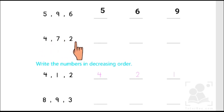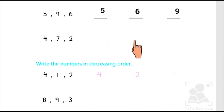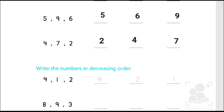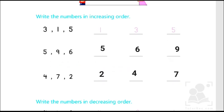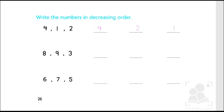Now let's move on to the next one: 4, 7, 2. Amongst these three numbers, the smallest one is 2, then comes 4, and then comes 7. So we are going to write the increasing order as 2, 4, 7. We are all done with the increasing order of numbers — the smallest is 2, then 4, and the greatest is 7.